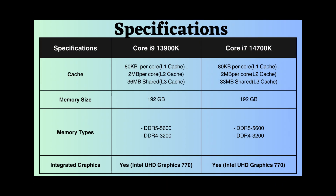The L1 and L2 cache size of both processors is 80 kilobytes per core and 2 megabytes per core, respectively. However, the L3 cache size of the Core i9-13900K is greater than that of the Core i7-14700K.